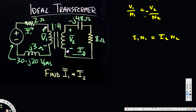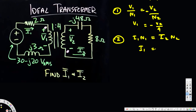The n1 and n2 values are 1 and 4 respectively. Using the first equation with n1 = 1: v1 = −v2/4. From the second equation with n1 = 1 and n2 = 4: i1·1 = i2·4, so i1 = 4·i2. These are the two transformer constraint equations.